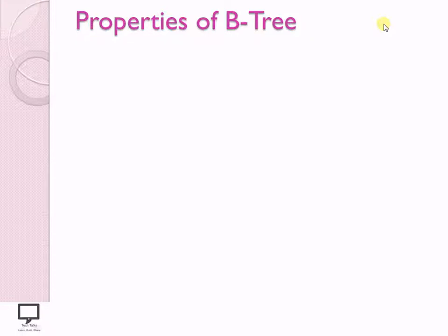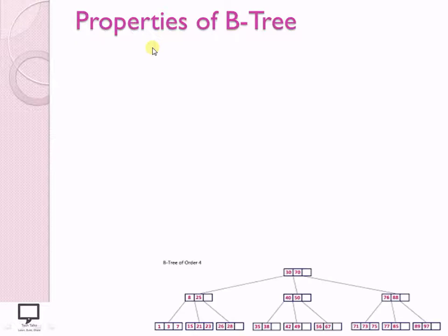Here I am assuming that all of you know the concept of B-Tree. Now let's start with the properties of B-Tree. I am going to explain all the properties with this example, where this is a B-Tree whose order is 4. It means that every node can hold a maximum of 3 keys and a maximum of 4 children, which decides the order of the tree.